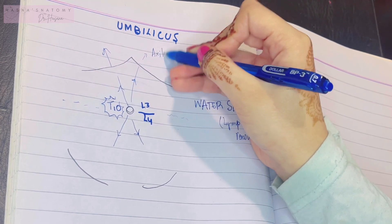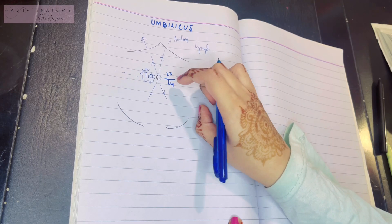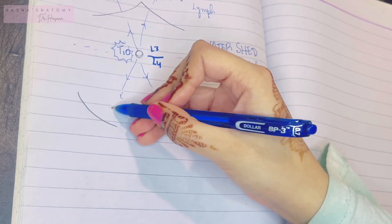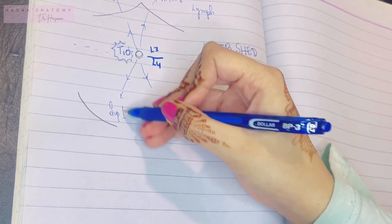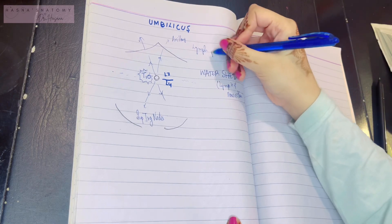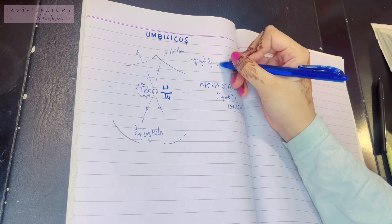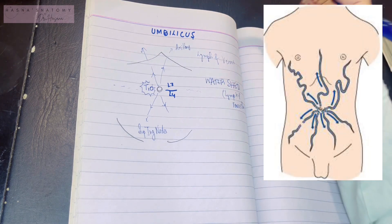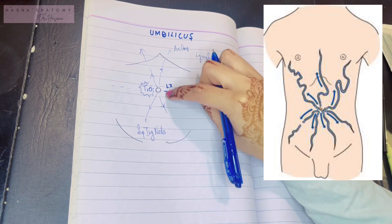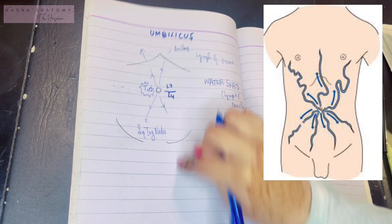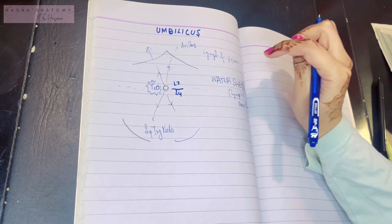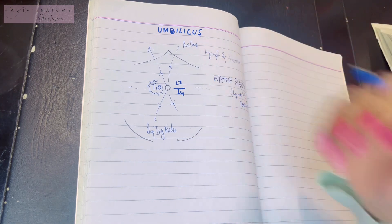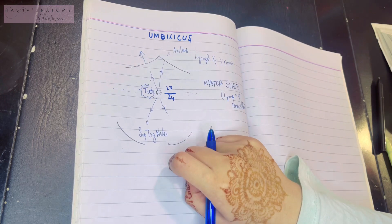Lymphatic drainage below the umbilicus — below this watershed line — drains into the nodes of the lower limb, which are the superficial inguinal lymph nodes. Similarly, veins follow the same feature: veins above the umbilicus drain into veins above, and veins below the umbilicus drain into veins below. This is the rule followed by the body under normal circumstances.